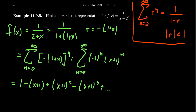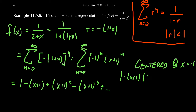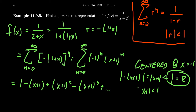We end up with a power series representation which is centered at x = -1. To investigate the interval of convergence, we take the absolute value of -(x+1), which is just |x+1|, and that needs to be less than 1. This tells us the radius of convergence equals 1. To find the interval of convergence, x+1 must be between -1 and 1, meaning x is between -2 and 0. So the radius of convergence is 1 and the series is centered at -1.